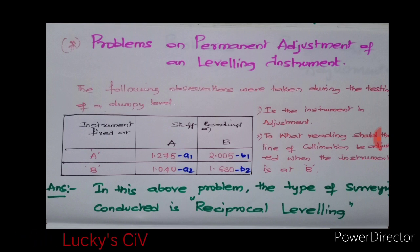In the second stage, when the instrument was fixed at B, the staff readings obtained on A as 1.040 and 1.660 on B respectively. Now the question is: is the instrument in adjustment and to what reading should the line of collimation be adjusted when the instrument is at B?